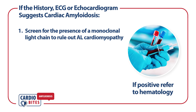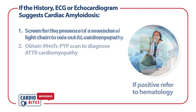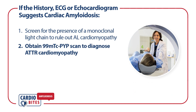Diagnosis of AL cardiomyopathy can be made with a combination of bone marrow biopsy, fat pad biopsy, and biopsy of the affected organ. If there is no monoclonal light chain, the use of technetium pyrophosphate scintigraphy, also called a PYP scan, allows for the non-invasive diagnosis of ATTR cardiomyopathy.